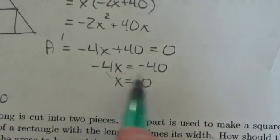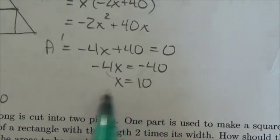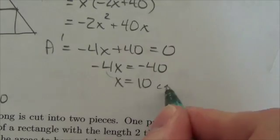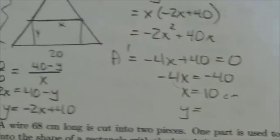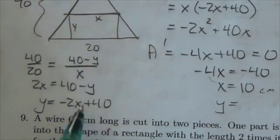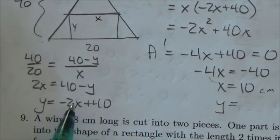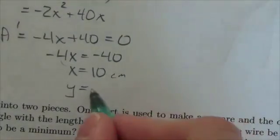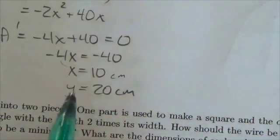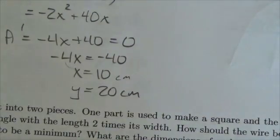So this tells us that rectangle is going to have a base of 10, 10 centimeters. And if that's true, if x is 10, negative 2 times 10 will be negative 20 plus 40 is positive 20. So these are the dimensions of the rectangle.